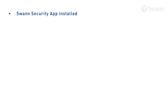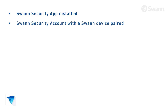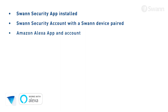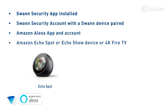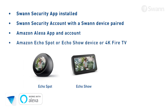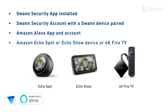Before you begin, please ensure you meet all the requirements shown. You have the Swan Security app installed. You have a Swan Security account with a Swan device paired. You have an Amazon Alexa app and account. You have an Amazon Echo Spot or Echo Show device or 4K Fire TV.